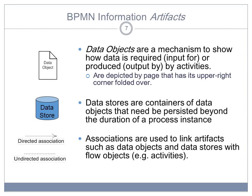We can further expand our process descriptions by adding information artifacts. These can be data objects and data stores. Data objects are a mechanism to show how data is required as input for a task or is produced as output of an activity. Data objects are shown as a sheet of paper with a folded corner in the upper right corner. Data stores are containers of data objects that need to be persisted beyond the duration of the process instance. So it means that when a process is over, the data that is stored in the data store still exists.